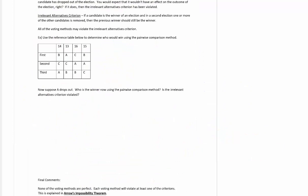Last one we're going to talk about is the irrelevant alternatives criterion. If a candidate is the winner of an election, and in a second election one or more other candidates is removed, then the previous winner should still be the winner. All of the voting methods may violate the irrelevant alternatives criterion. Let's use the reference table below to determine who would win using the pairwise comparison method. We have A, B, and C. So it's going to be A versus B, A versus C, and B versus C.